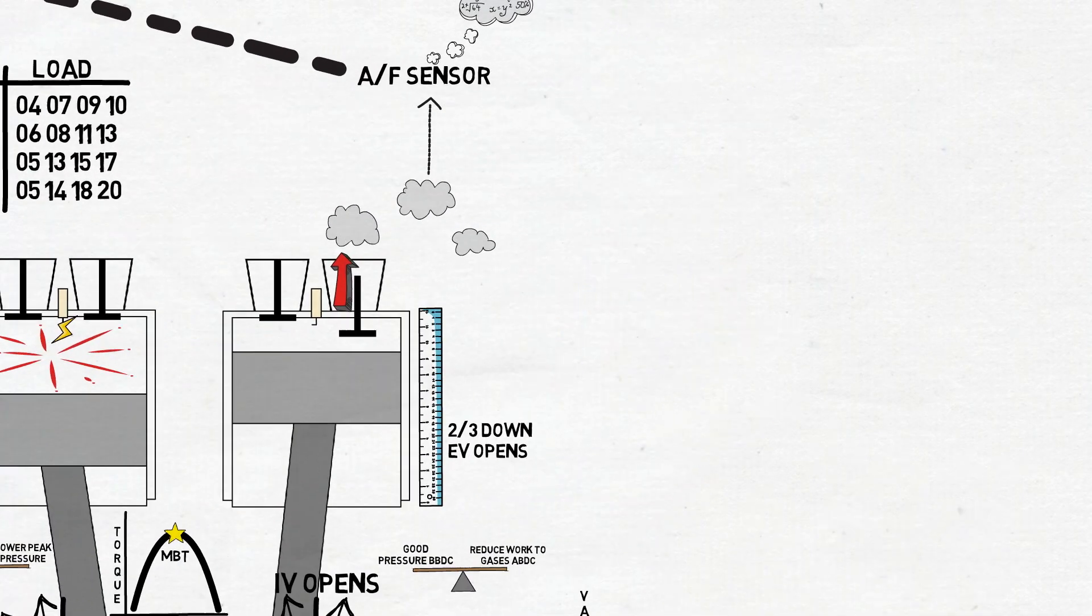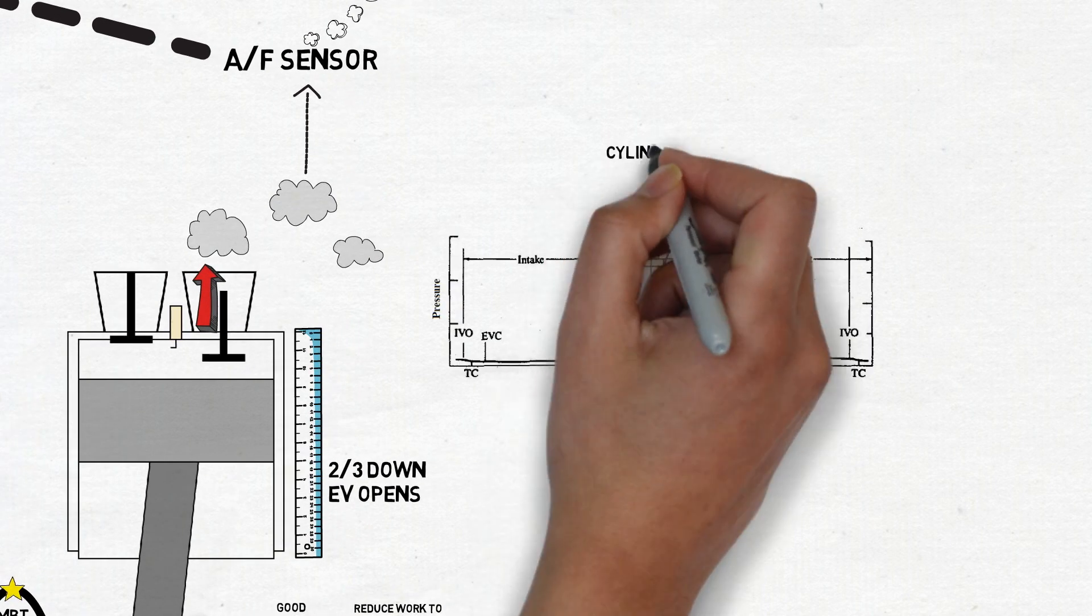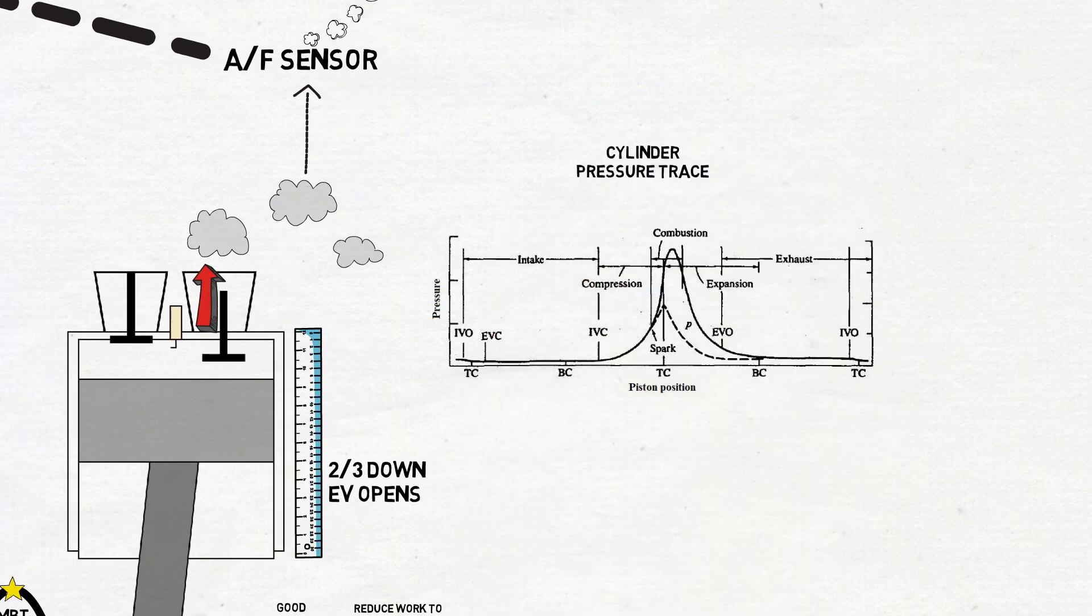To close things up, there is a very useful chart called cylinder pressure trace that summarizes most of the things that I mentioned in this video. This chart plots cylinder pressure versus piston position. Similarly, the line obtained from a non-firing engine is called motoring pressure trace. It differs since it has a lower maximum pressure and it peaks at top dead center since there is no expanding explosion.